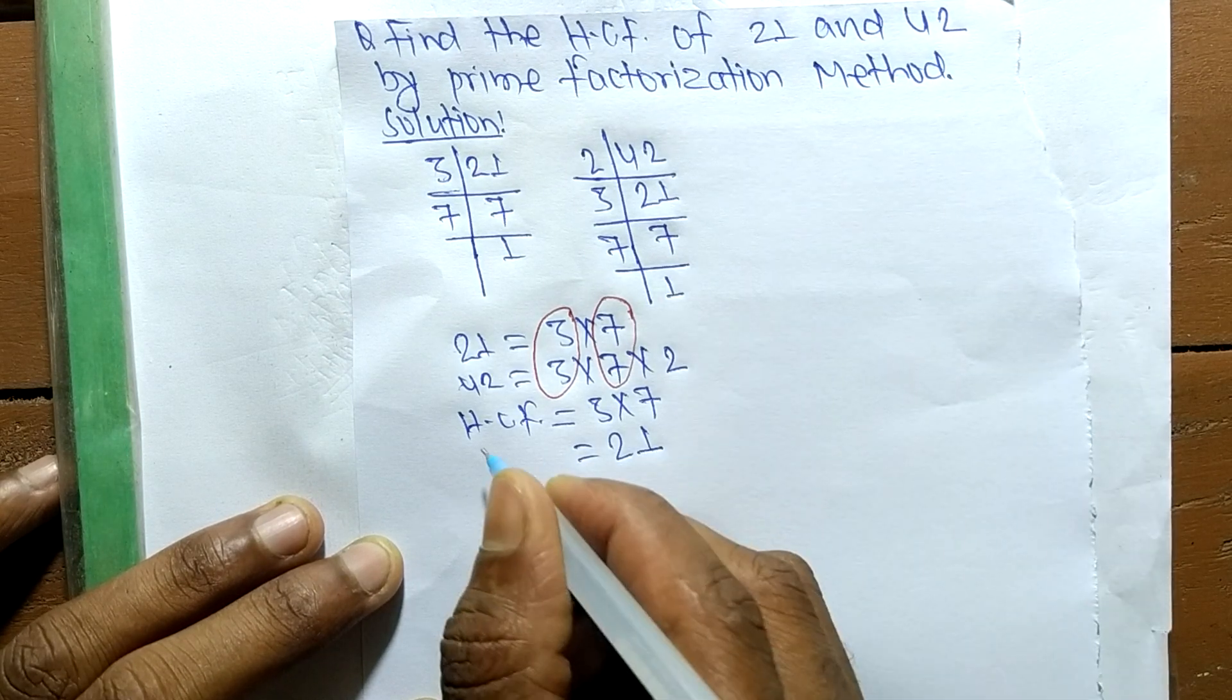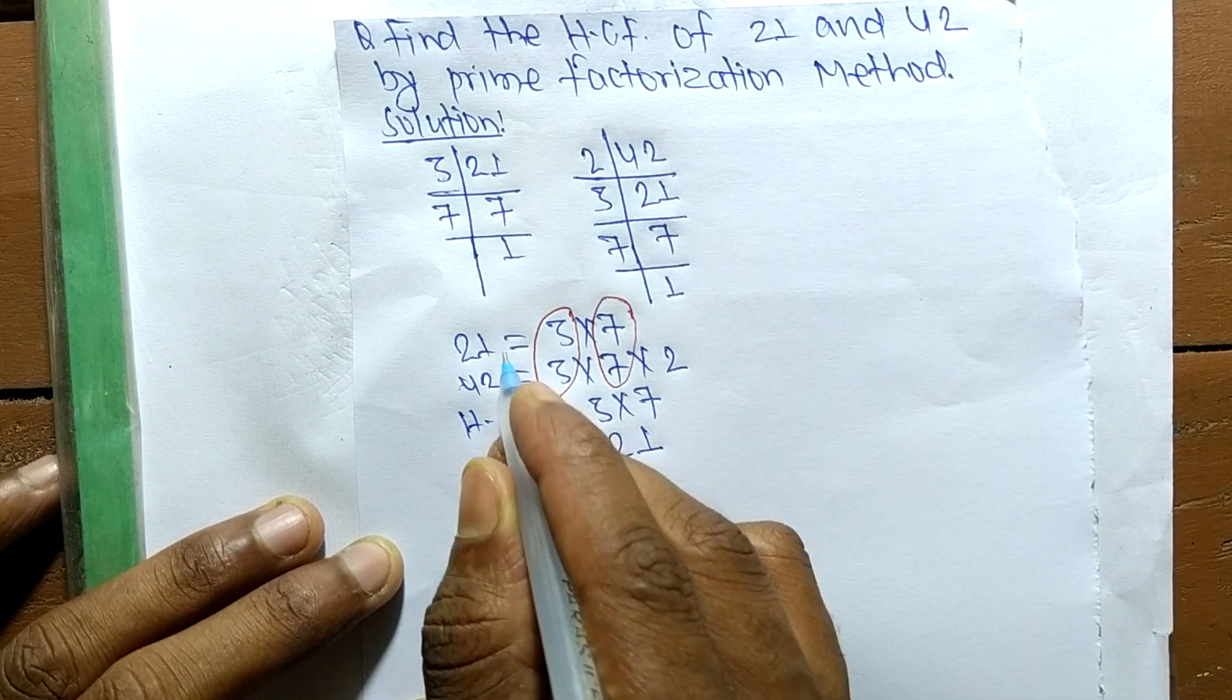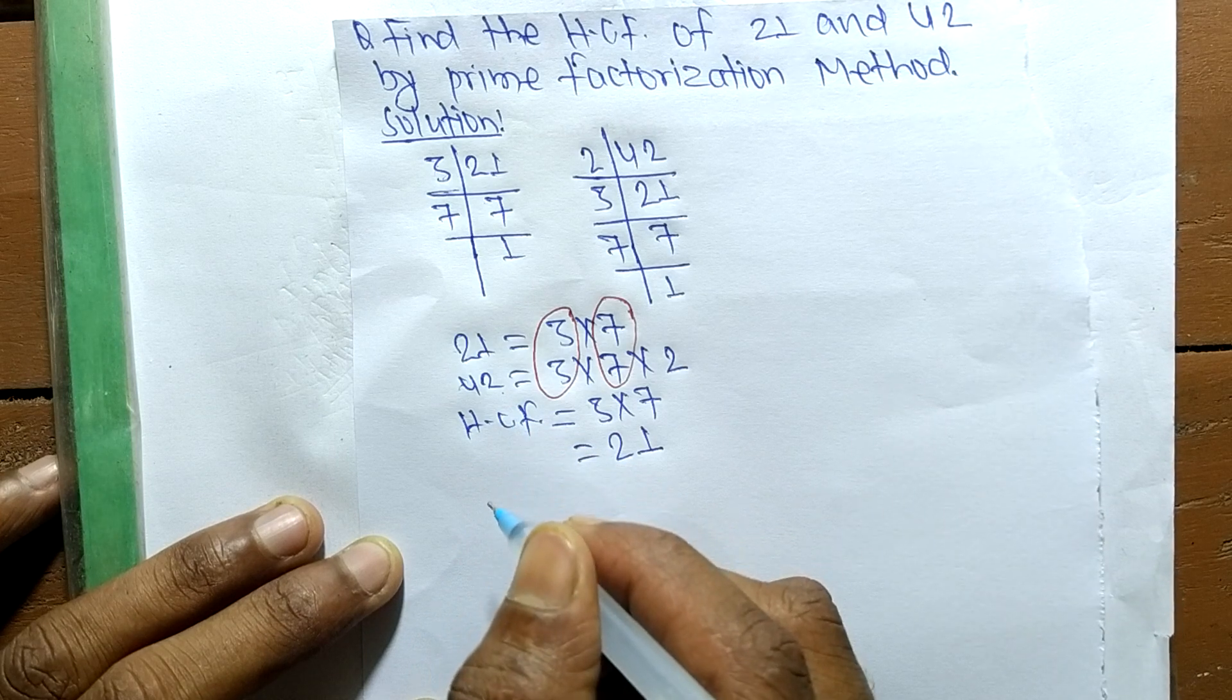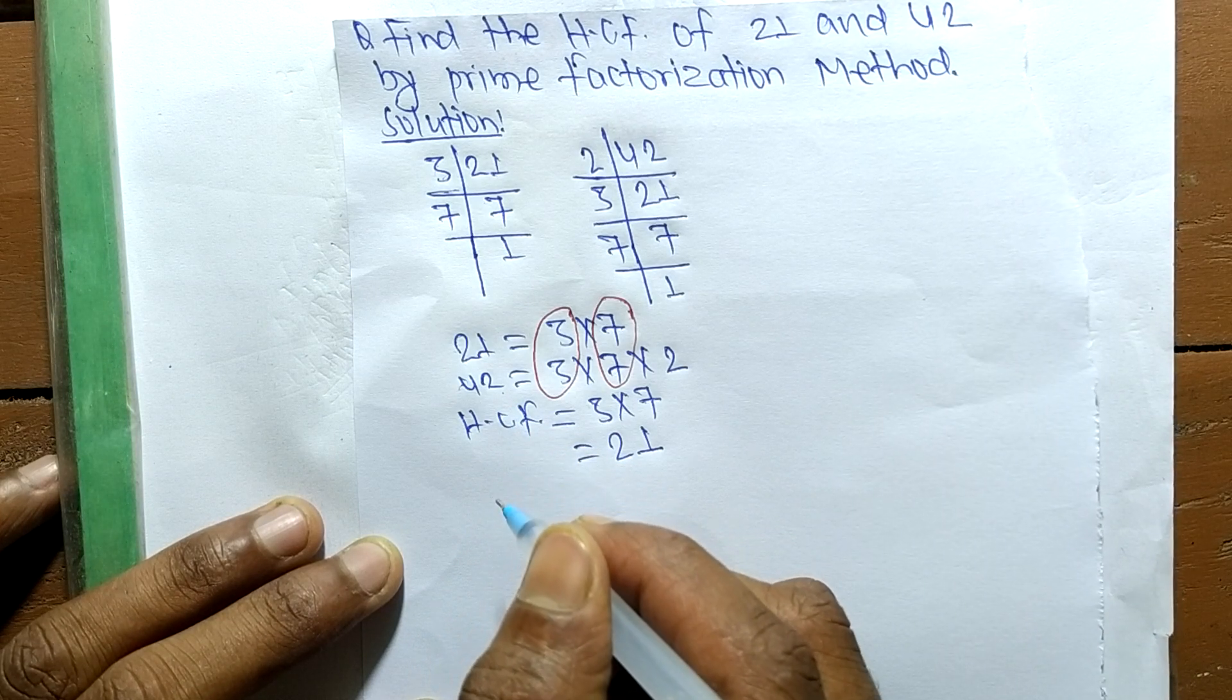21 is the highest common factor of 21 and 42. This much for today, and thanks for watching.